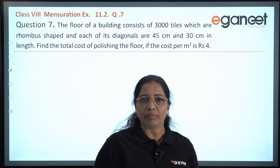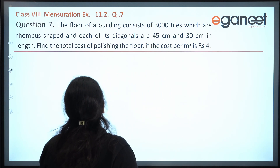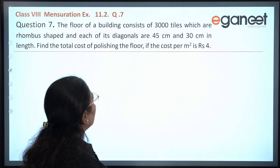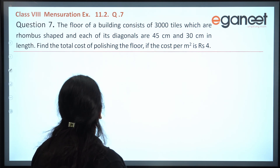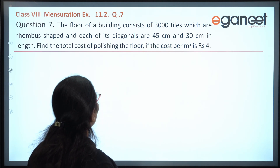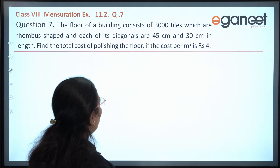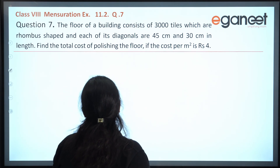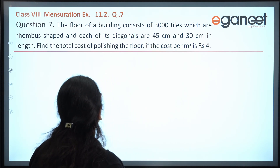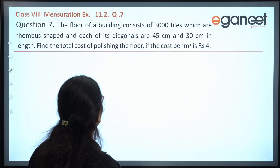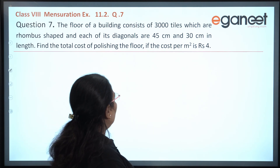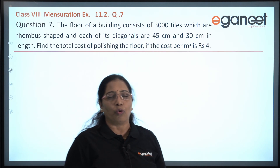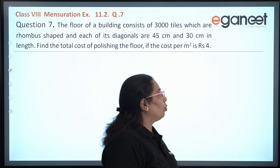Let us read the problem now. The floor of a building consists of 3000 tiles which are rhombus shaped, and each of its diagonals are 45 cm and 30 cm in length. Find the total cost of polishing the floor if the cost per meter square is rupees 4.